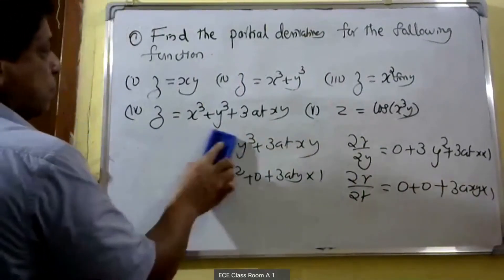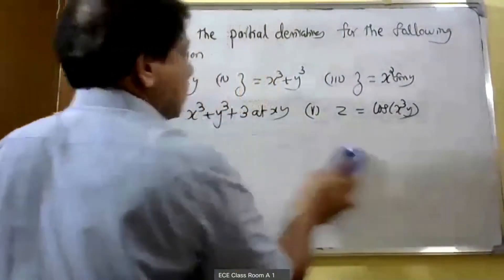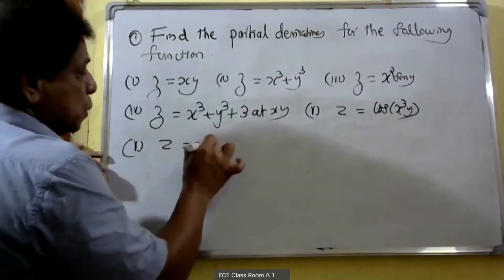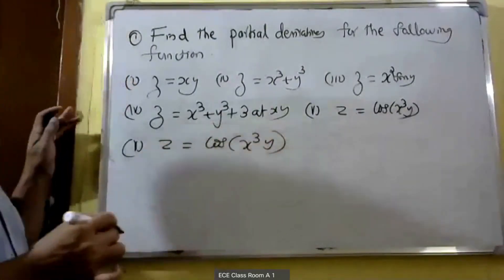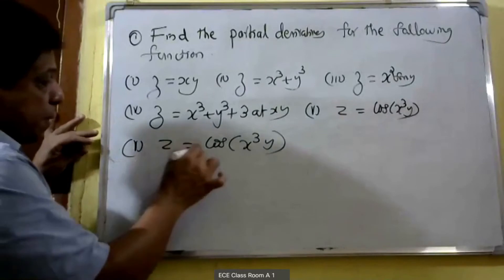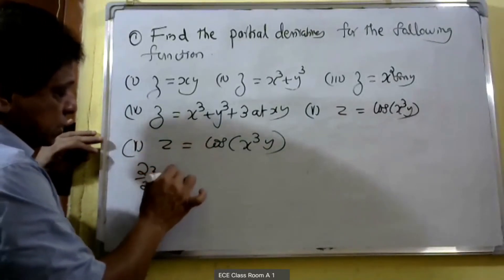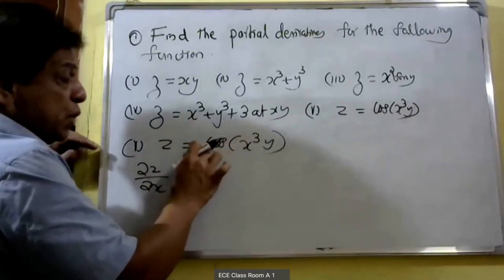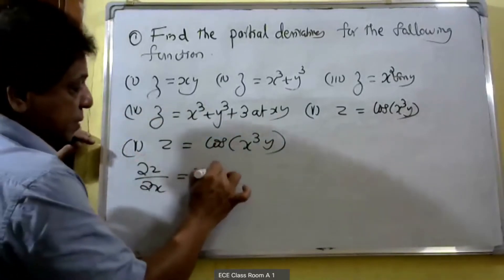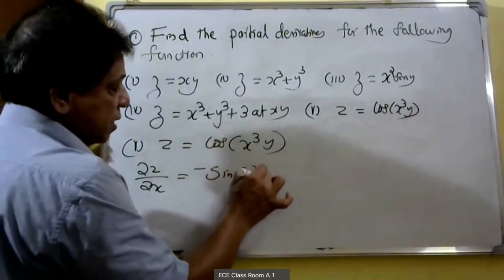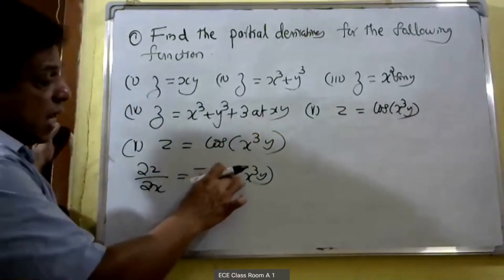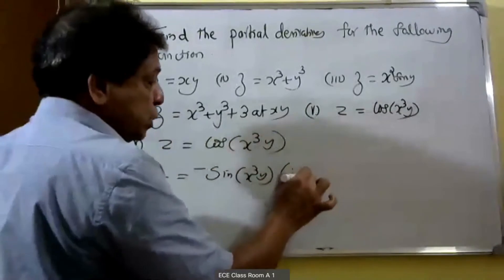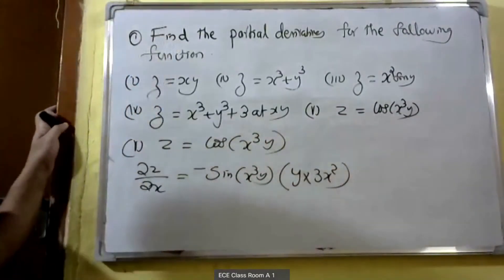Then we do the next problem. z is equal to cos(x³y). Partially differentiating with respect to x, ∂z/∂x: derivative of cos is minus sin, so we get minus sin(x³y). Then we apply the chain rule. The derivative of x³y with respect to x — y is constant — gives y into 3x². Therefore ∂z/∂x equals minus sin(x³y) into 3x²y.